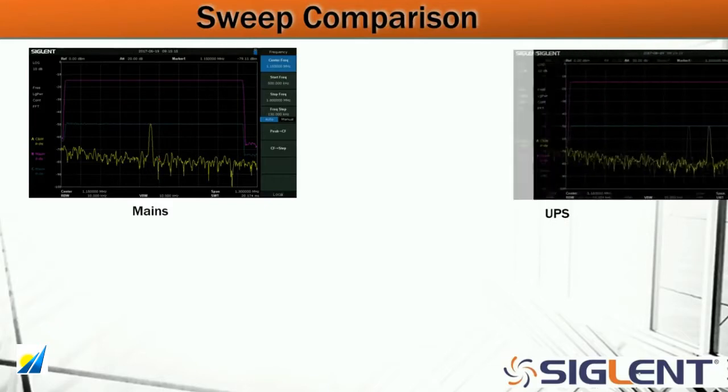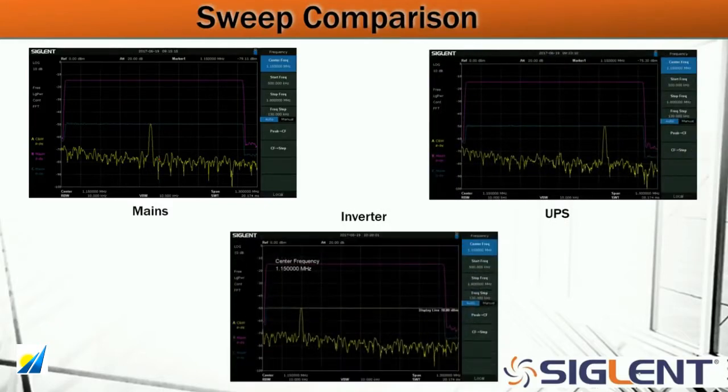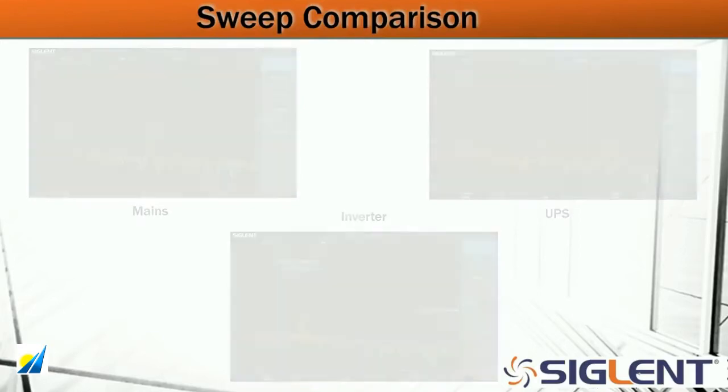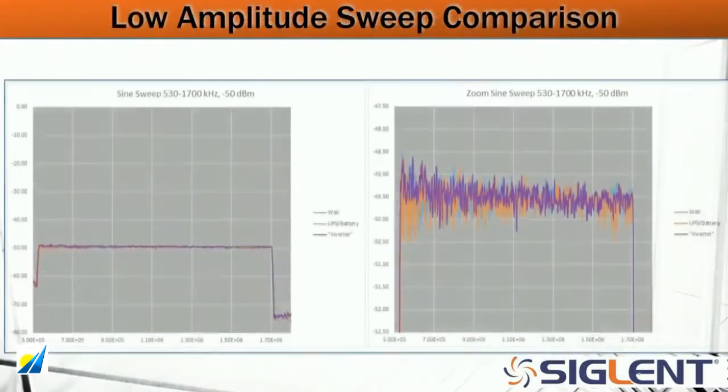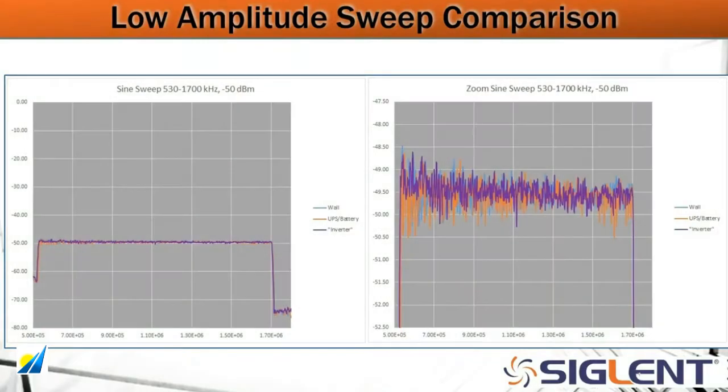We can easily compare all of the data collected from the different power modes using the bitmap images. Here we've got mains of the sweep, the uninterruptible power data, and then also the data collected using the inverter. Again, they look quite similar. But we can also collect the raw data, the CSV file data, for each of the individual sweeps, and then compare them or overlay them in a spreadsheet program. Here we've got the blue trace is the wall data or mains data, the orange is the UPS or battery powered, and the purple is the inverter collected data. Now that was the minus 15 dBm. And this is the minus 50 dBm sweep. And you can see there's quite a bit of correlation between all three different power modes being used on the analyzer. So I feel pretty good about the correlated data. And we have a few more examples coming up.